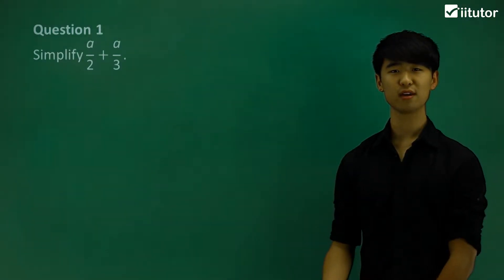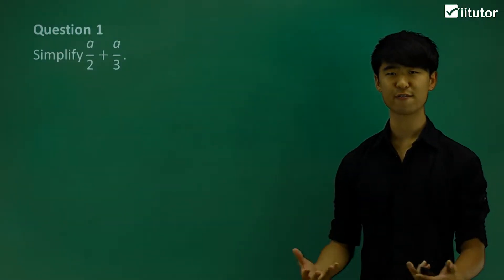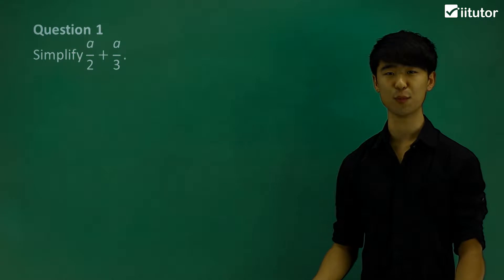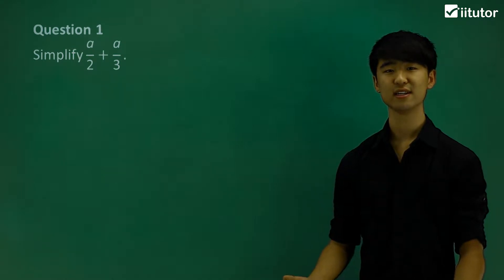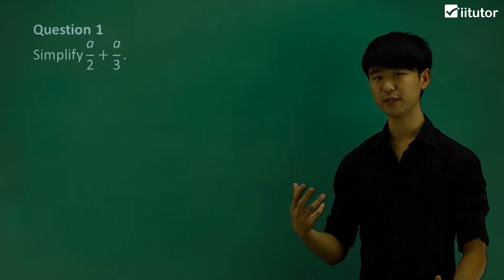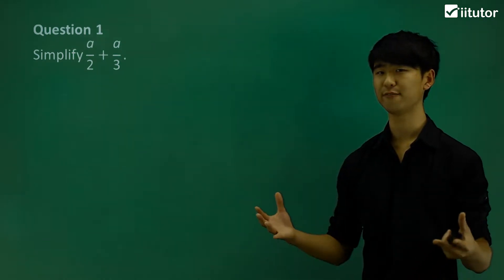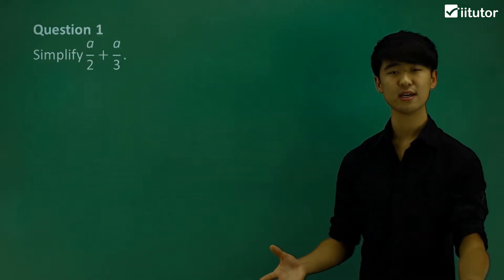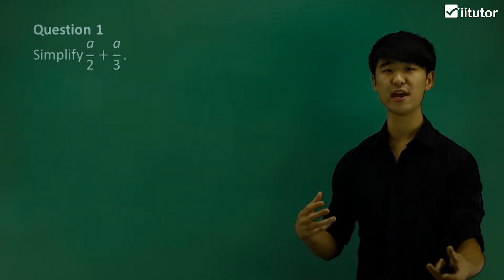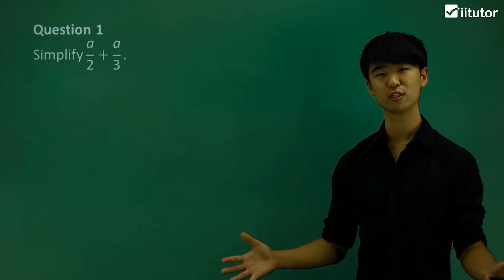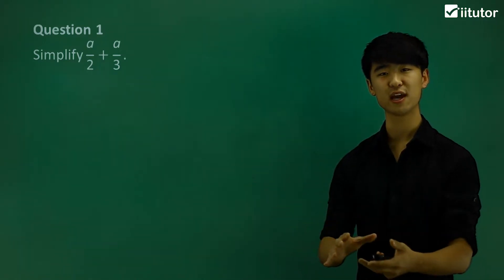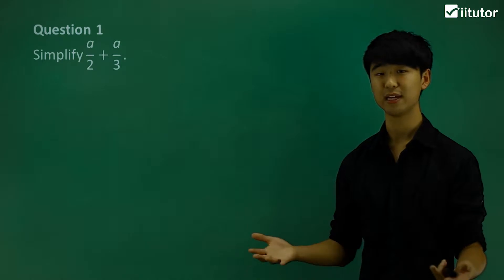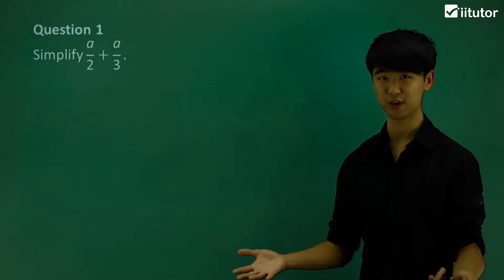We're going to be working on simplifying fractions that have different denominators. What we need to do when we have two different denominators is to create a common denominator in order for us to put the fractions together and simplify. That's what we're going to be working on.